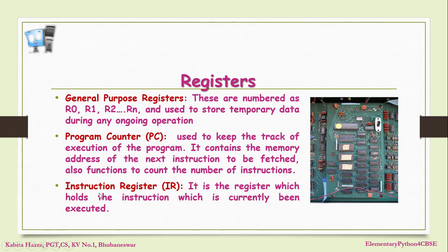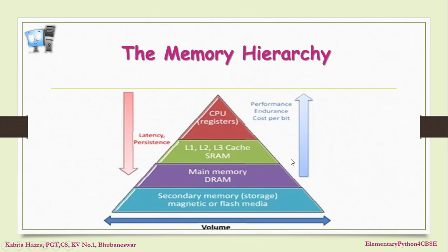Looking at the memory hierarchy: secondary memory has the largest storage capacity, followed by main memory, then cache memory, and registers are the smallest. In terms of performance, registers are fastest, cache memory is faster than main memory but slower than registers, main memory is slower than cache but faster than secondary memory, and secondary memory is the slowest.